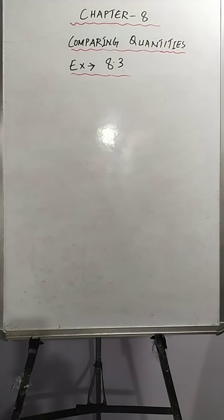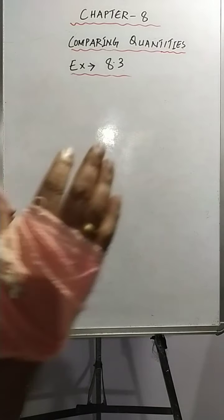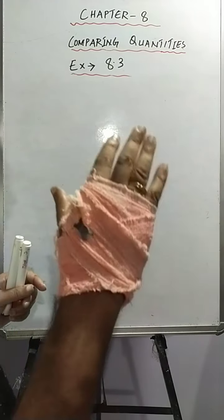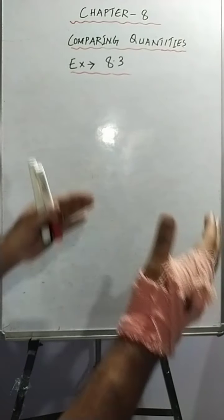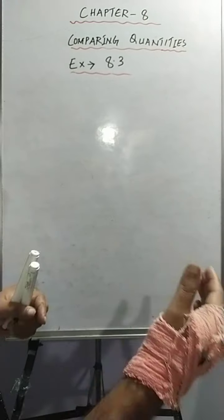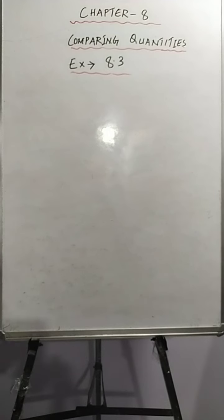Today we will start Exercise 8.3 on comparing quantities. I have shared a previous video where you learned about the difference between CI and SI. In simple interest, the principal remains constant — it never changes. But in compound interest, as I said in my last video, it always changes after a certain period of time. Because the principal changes, the value of compound interest will always be greater than simple interest.